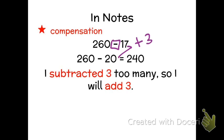So 260 minus 17. Well I'm going to do 260 minus 20, so I can do that a little bit quicker than 17. But I have to pay attention to the fact that I have now subtracted more than I need to subtract.